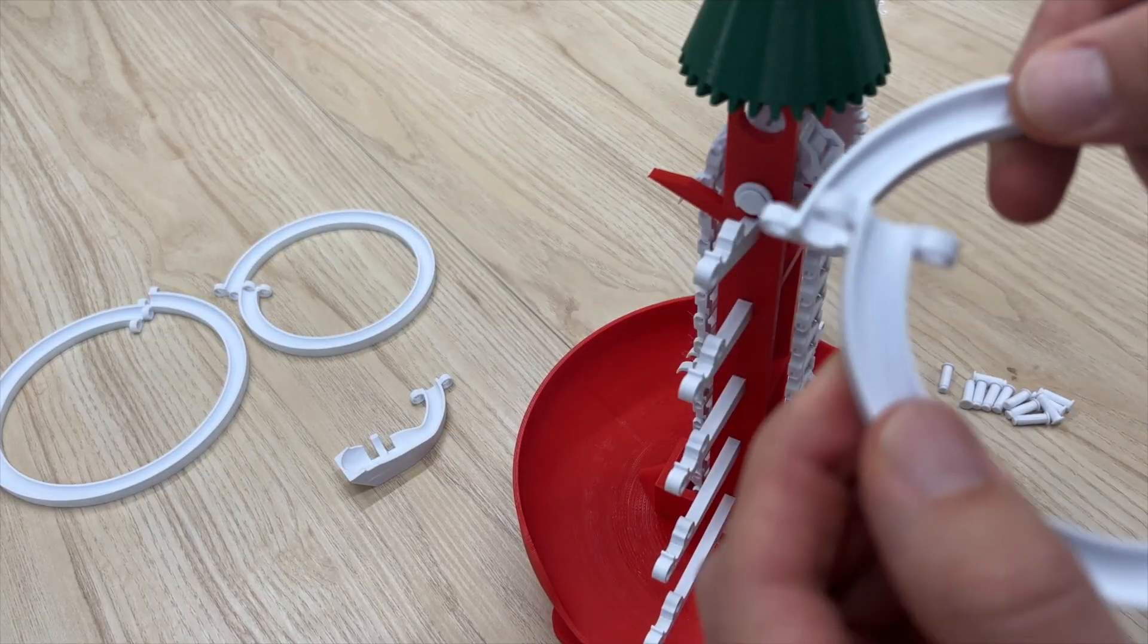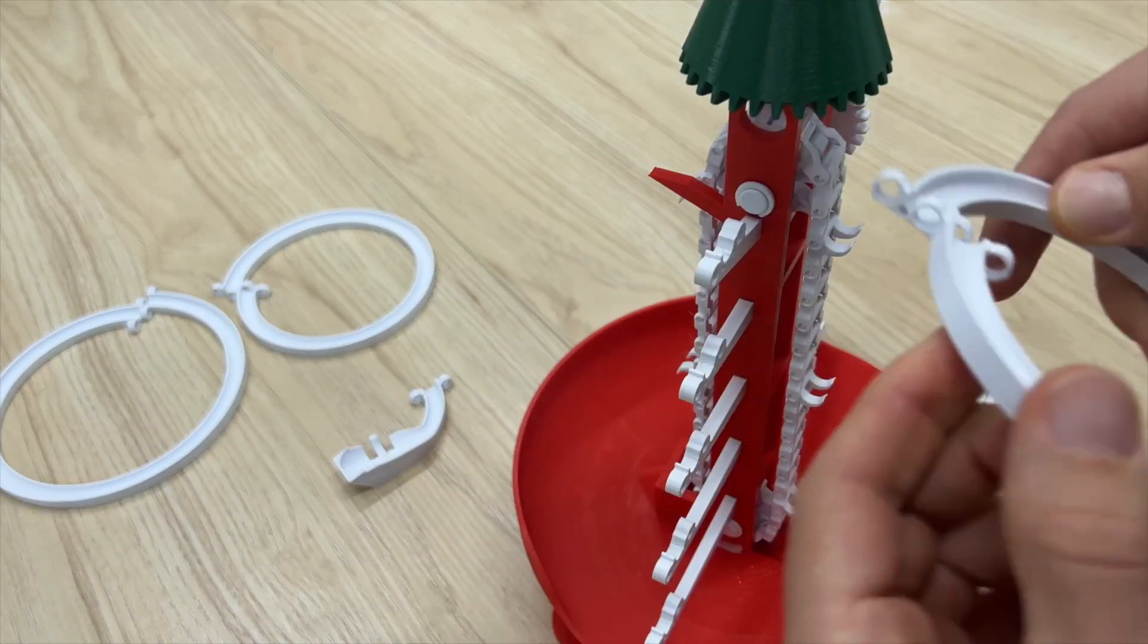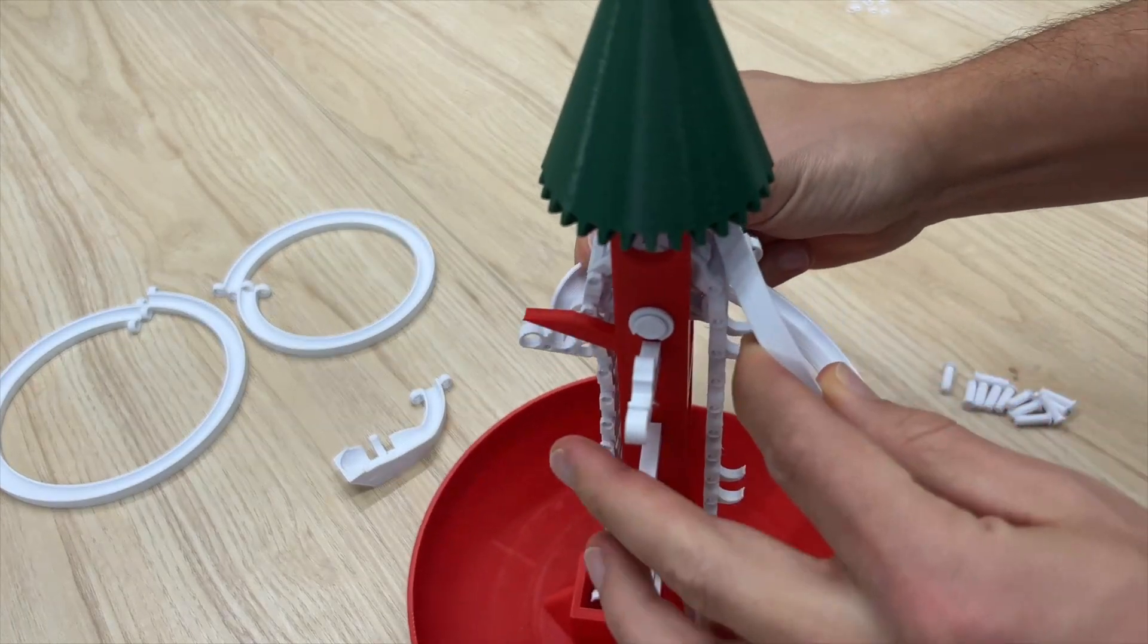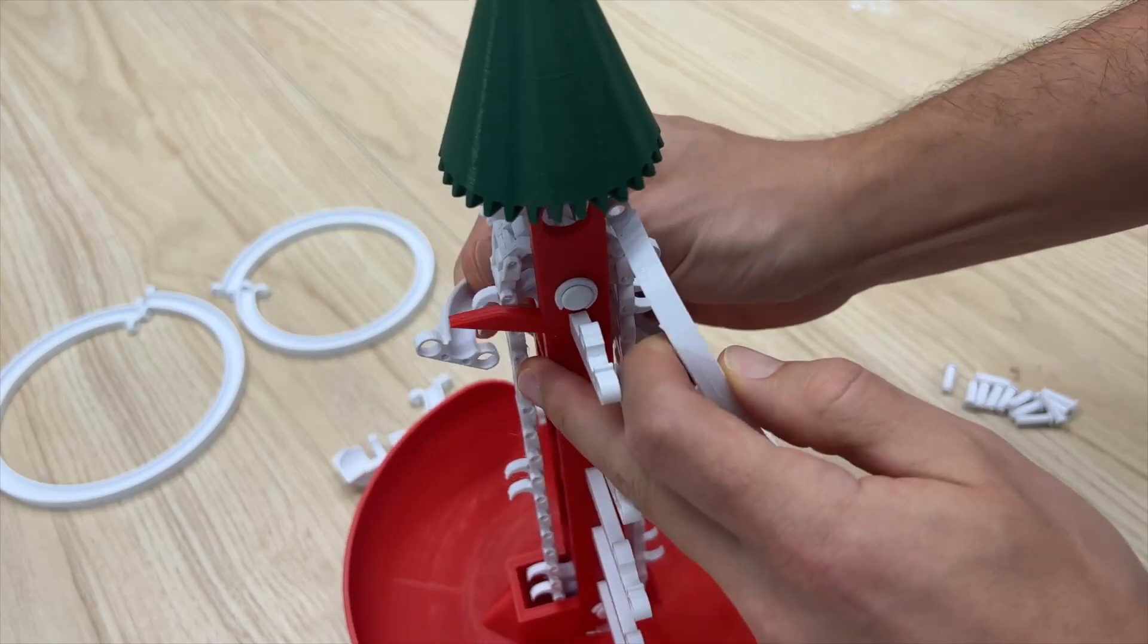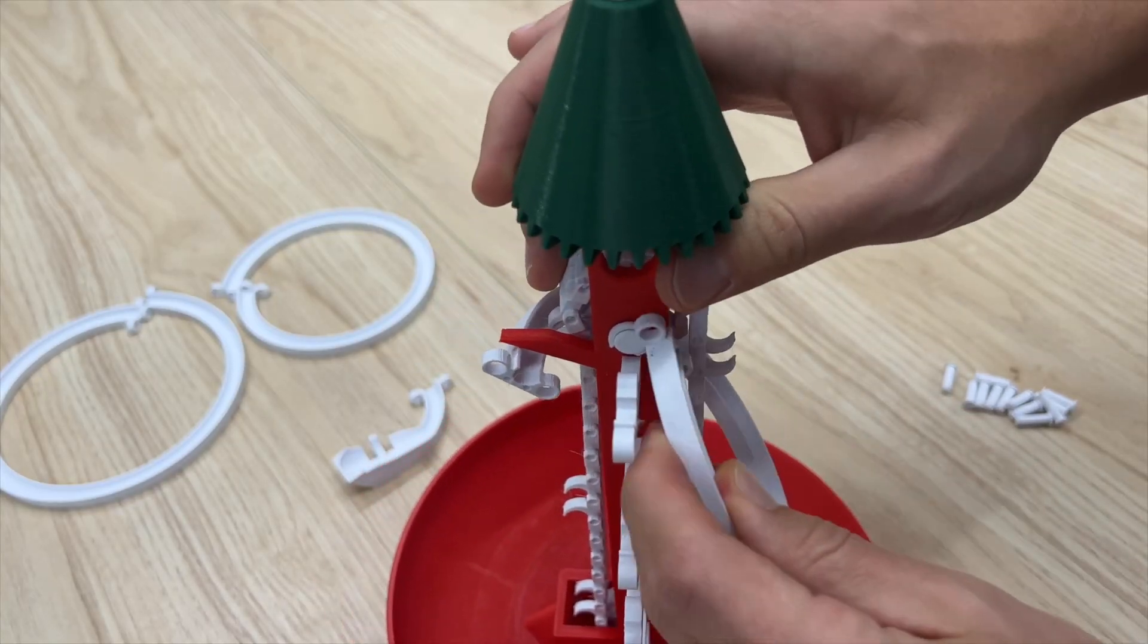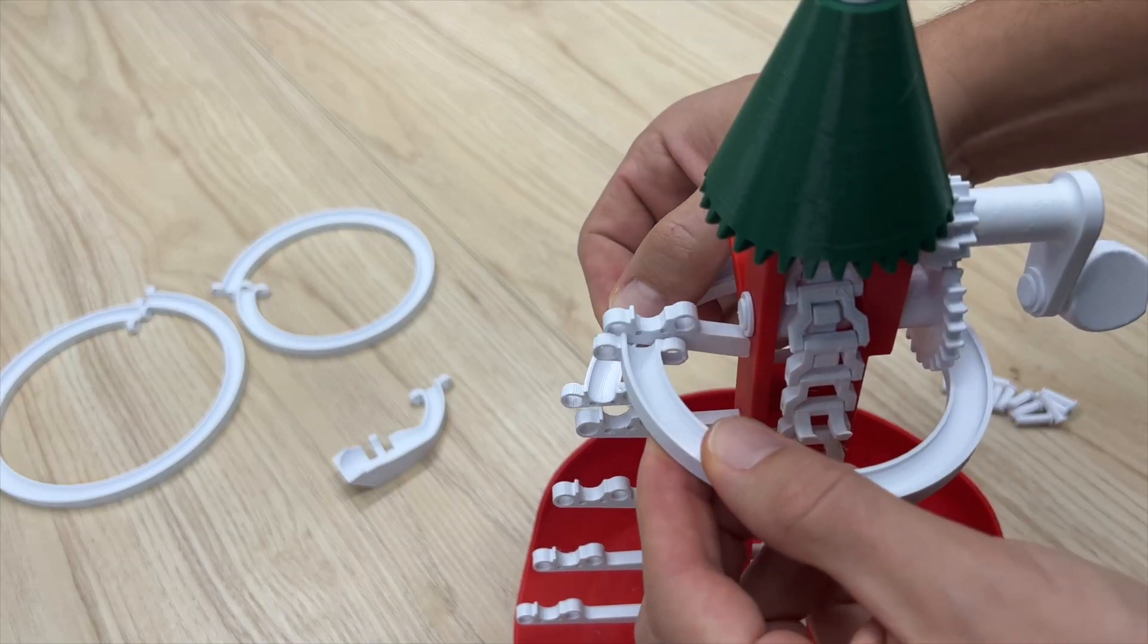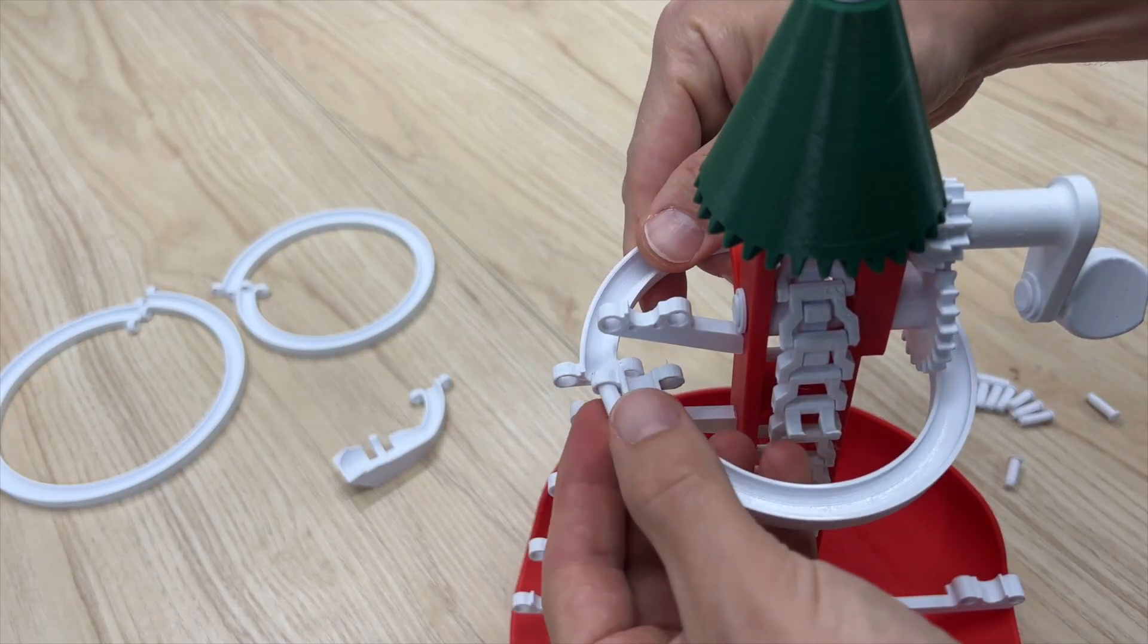Now it's time to build the track. So grab the smallest track segment and you kind of have to twist it and bend it around the stand, but it's okay, it's designed to do this. So once you have it around the stand, it's going to kind of sit in this orientation. So grab a couple of the small five millimeter pins and slide them through.